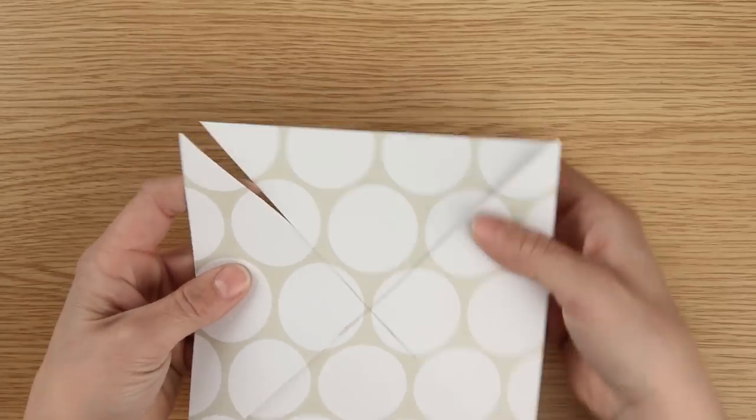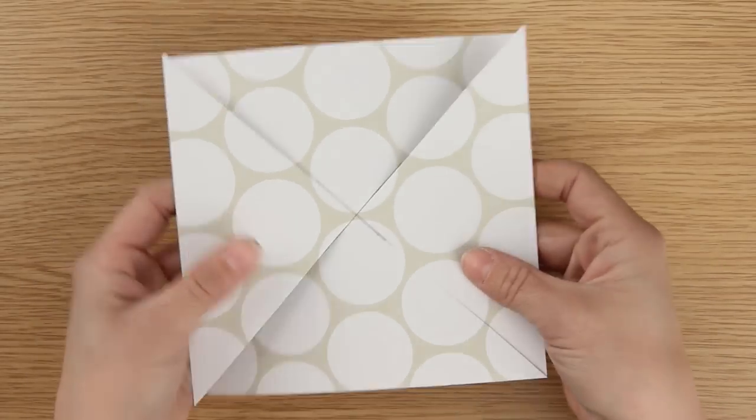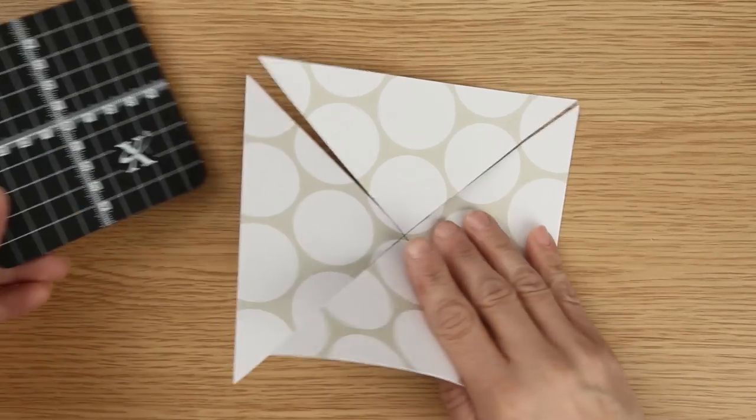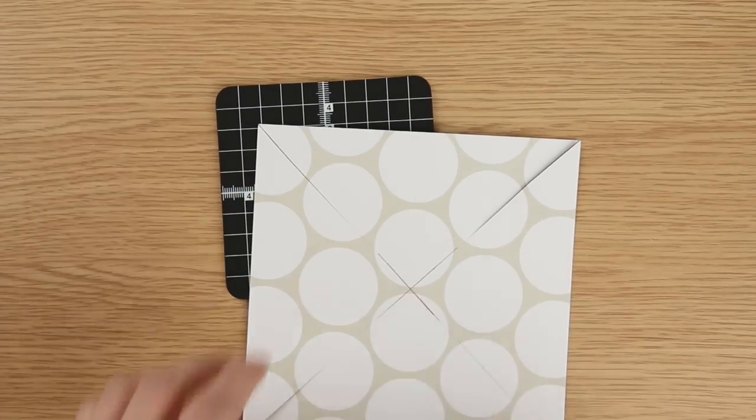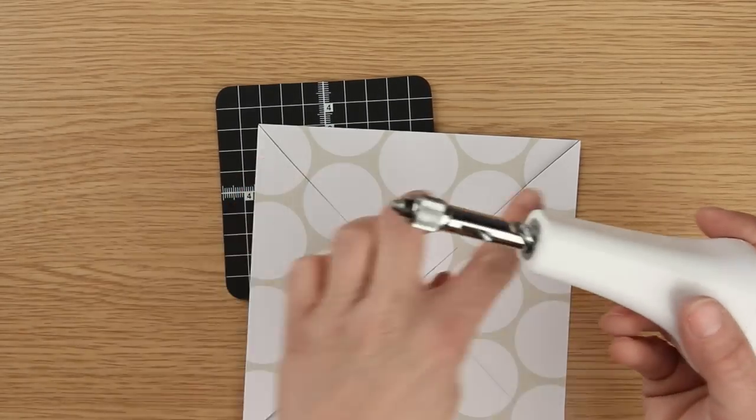This gives us a square with four sections as you can see. Next we need to punch some holes and I'm going to use my X-Cut screw hole punch tool to make a hole in four corners.